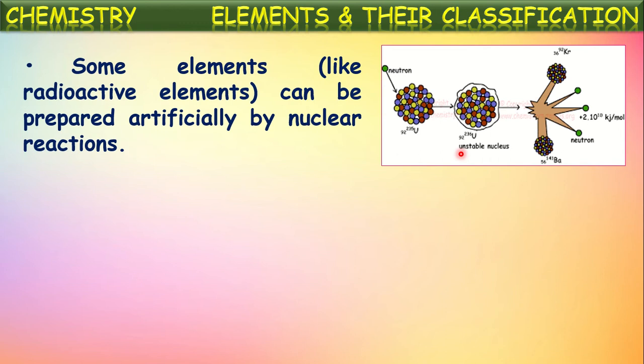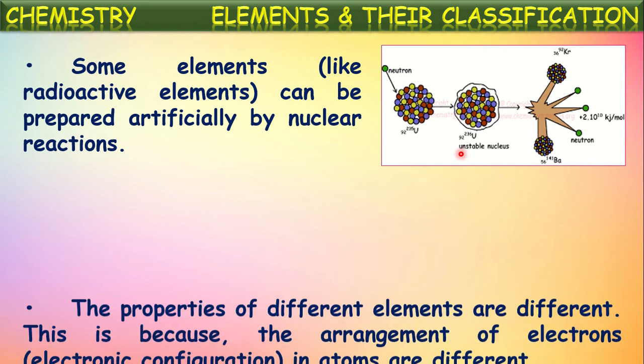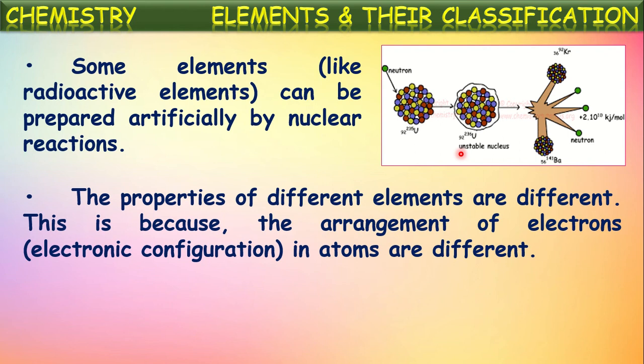Elements created in nuclear reactions are called synthetic elements or artificial elements. The properties of different elements are different because the arrangement of electrons in their atoms is different. This arrangement is called electronic configuration. Since electronic configurations differ from element to element, they possess different properties.